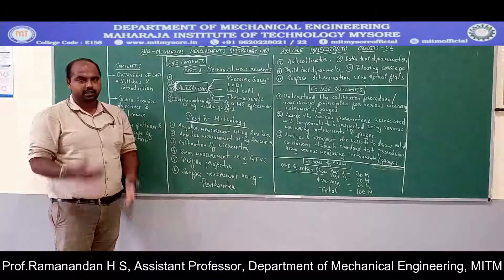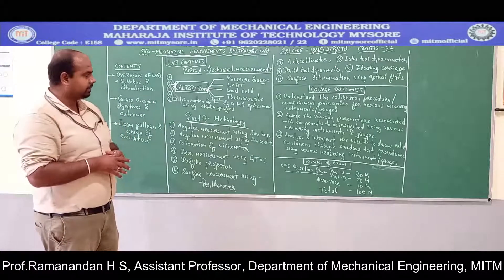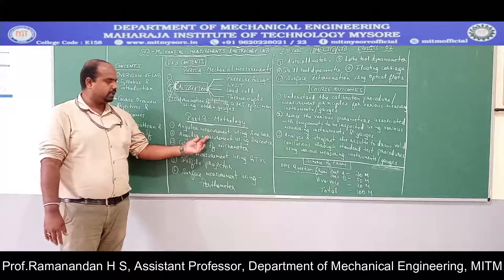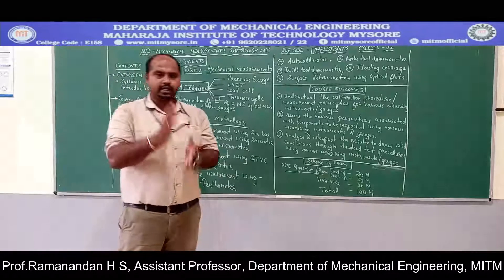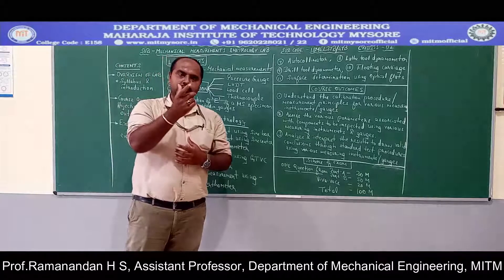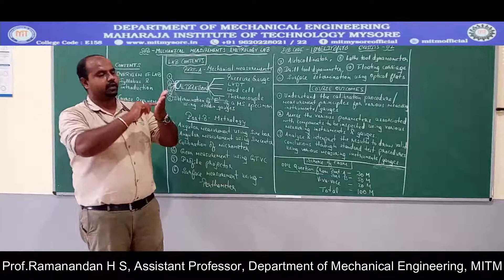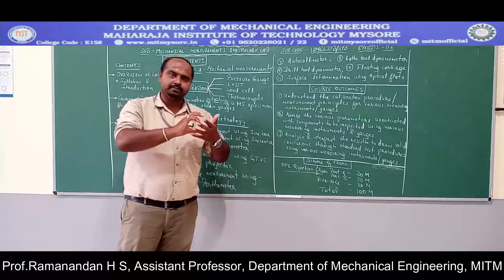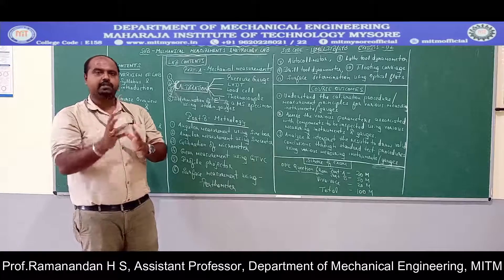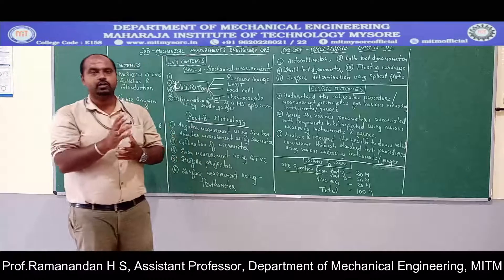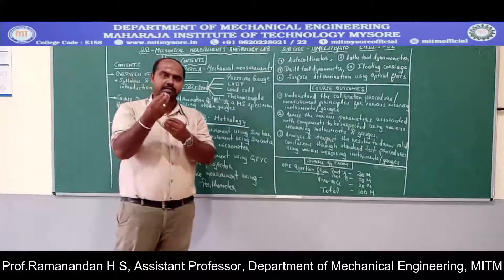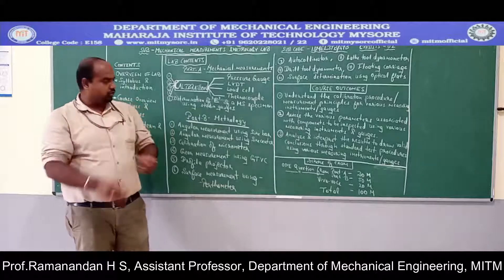Part B is all about metrology — the science of pure measurement. The experiments include angular measurement using a sine bar and sine center with slip gauges as secondary standards. For example, to measure the angle of a three-dimensional conical object such as a hopper, chimney, or wedge-shaped component, we use a sine bar and sine center, which help us measure angles that cannot be easily measured with a protractor.